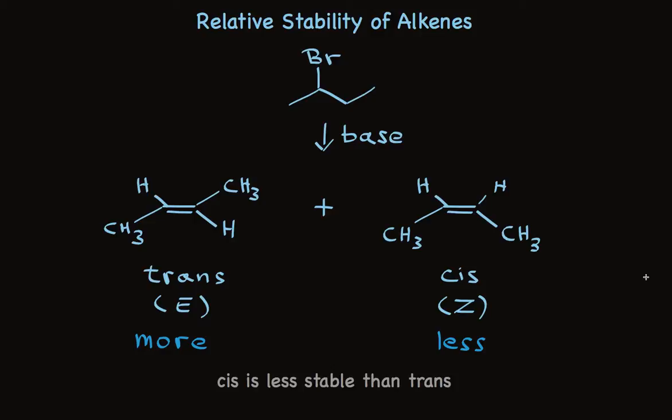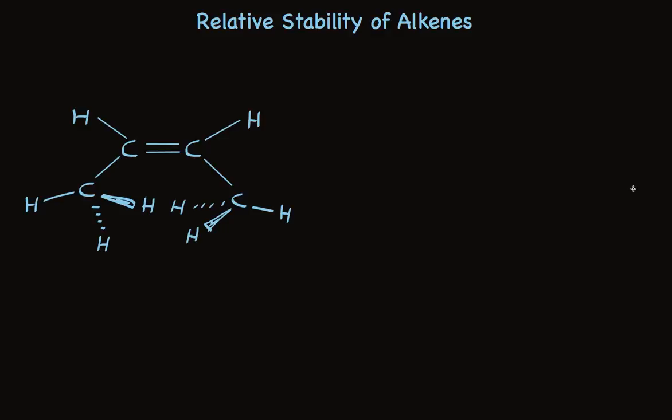So, why is that? Well, there's an explanation that's easy to understand. I have rewritten the structure of 2-butene to show the two methyl groups, including the hydrogens bonded to each carbon. I've done this so we can show the space that these two methyl groups would like to occupy, roughly indicated by the circles. Those circles actually overlap.